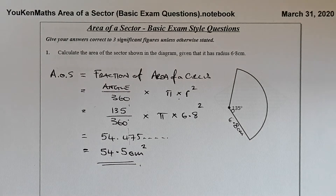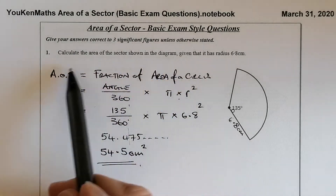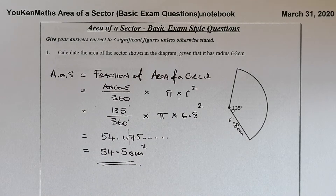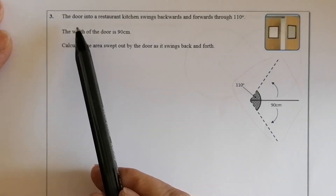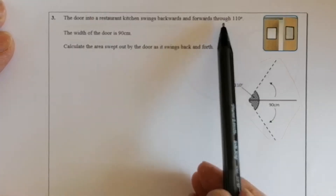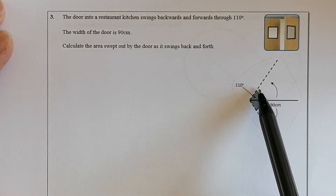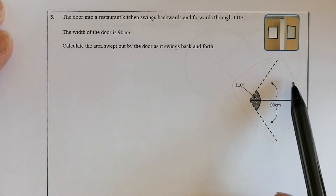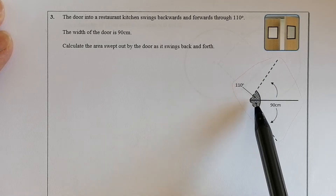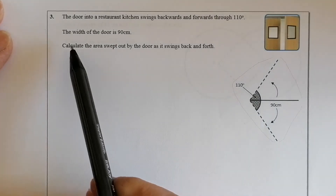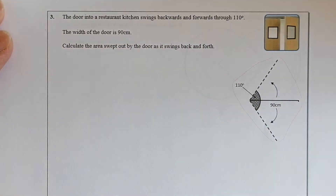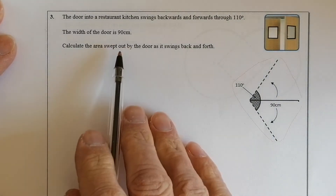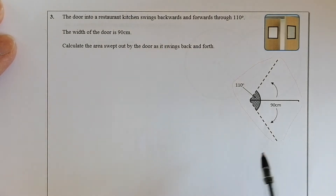So we're going to use this formula for working out all five questions. Next one: the door into a restaurant kitchen swings back and forth through 110 degrees — so there's the angle. Here's the door — it swings both ways. The width of the door is 90 centimetres. We're going to calculate the area swept out by the door as it swings back and forth.